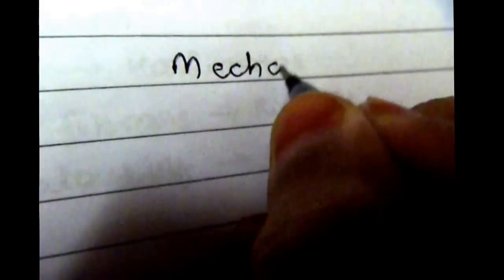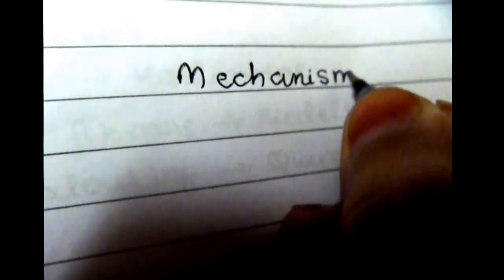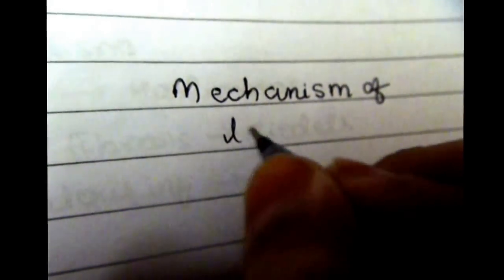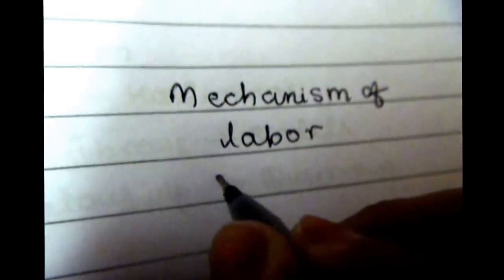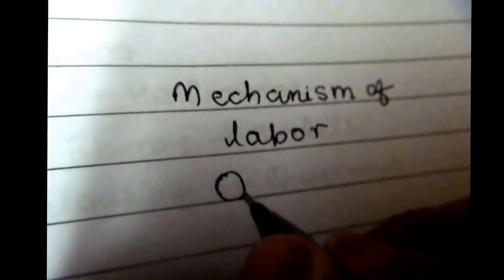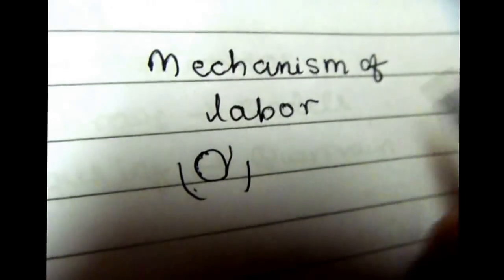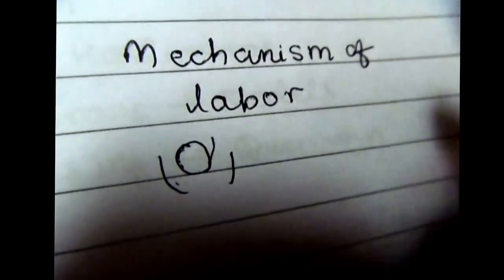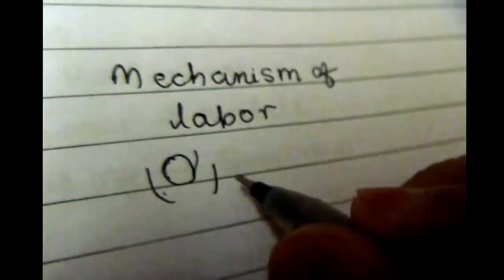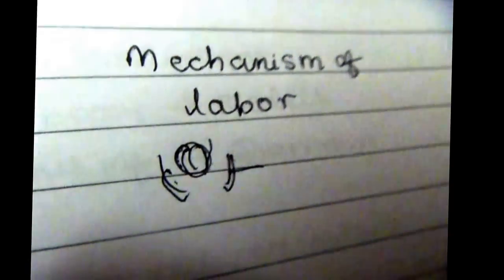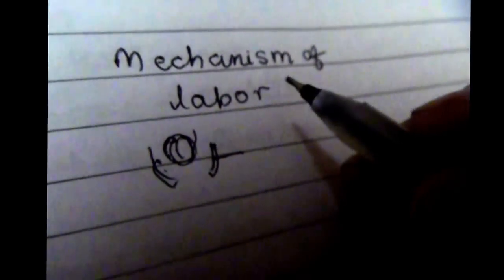Hi everyone. I am going to talk about the mechanism of normal labour today. Mechanism of labour is defined as a series of movements that occur at the fetal head while it is passing through the birth canal. For MBBS students, this is asked in vivas where you are supposed to demonstrate it on a dummy pelvis and a baby.